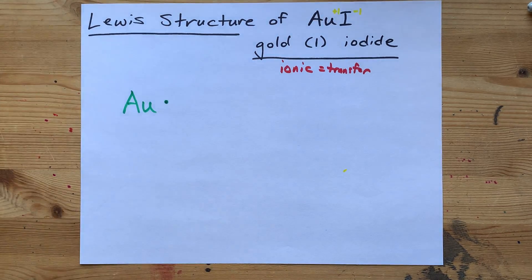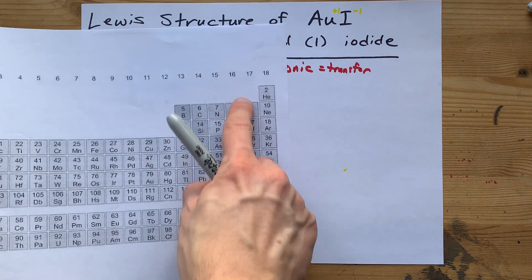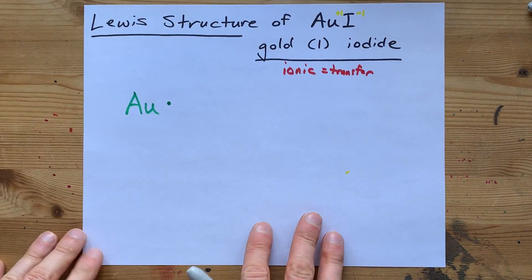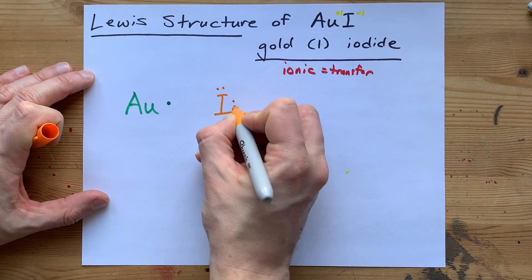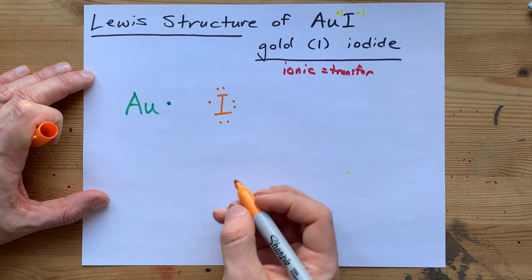Iodine, I showed you, is in group 17. So it brings 7 valence electrons with it. There's the iodine. 1, 2, 3, 4, 5, 6, 7 electrons.